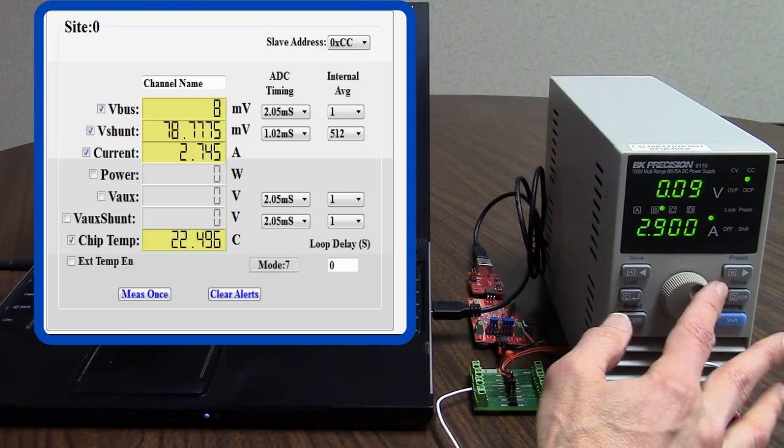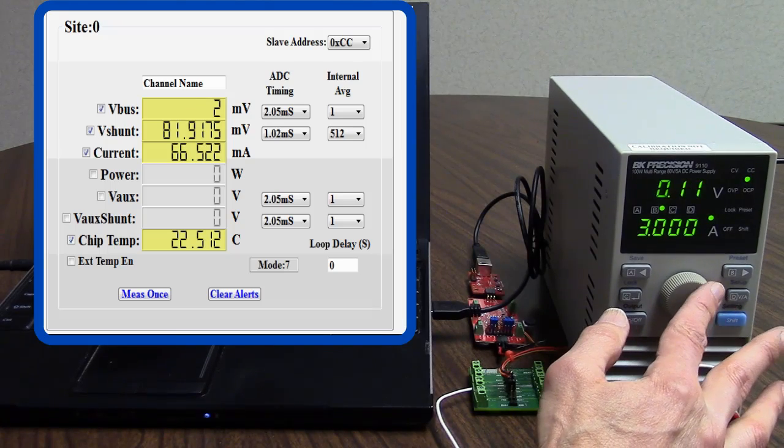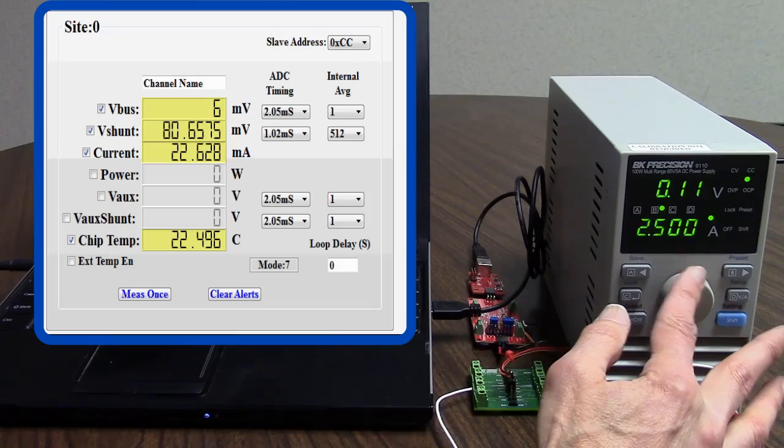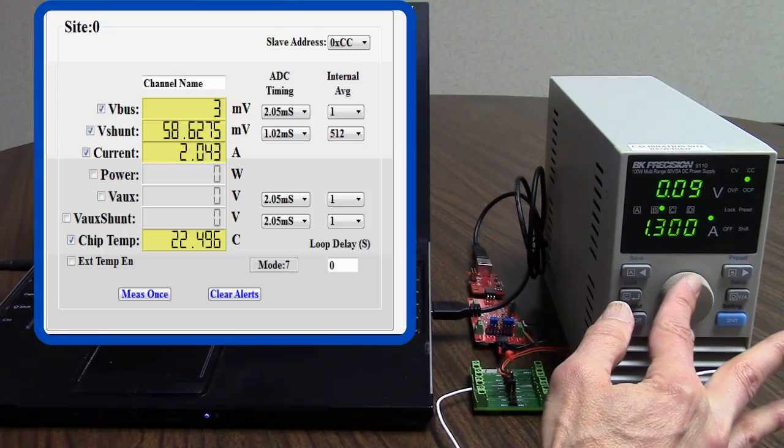The sensor is linear to more than 2 amps in this configuration, and that's about where the DPM IC saturates. So the sensor's linear range matches up pretty well with the DPM.